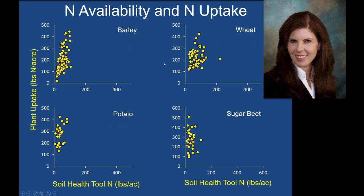To look at what the crop is actually seeing in the field, we compared soil health tool nitrogen in pounds per acre on the X-axis versus what the plants were taking up on the Y-axis. It's best to look at the low and high end of the scale since we did apply nutrients to the treatments in the middle. Even in our control plots where we applied no added nitrogen throughout the season, the soil health tool was estimating pretty low amounts of available nitrogen, while the crops were taking up quite a bit. So even though the soil health tool wasn't seeing the nitrogen, the plants were definitely taking it up.